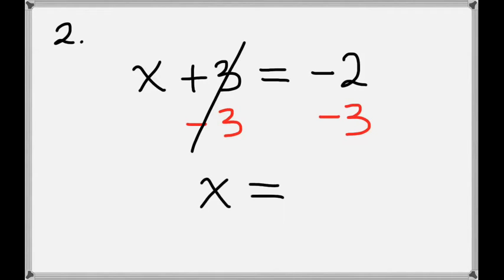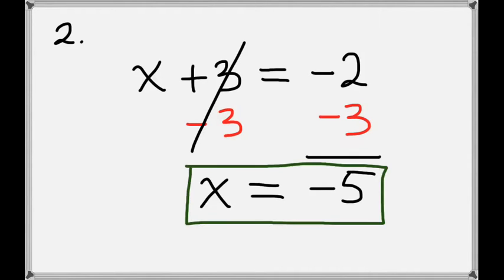So we'll just be left with x. And on the right hand side we'll have minus 2 subtract 3, which leaves us with minus 5. So our answer is x equals minus 5.